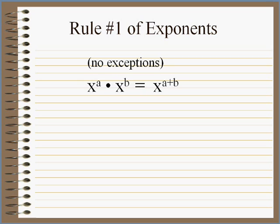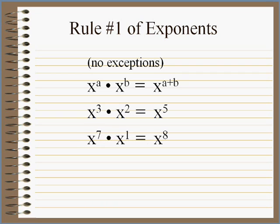Consider this rule: x to the a times x to the b is x to the a plus b. That's a shortcut. For instance, x to the third times x to the second is x to the fifth. Or x to the seventh times x to the first is x to the eighth.